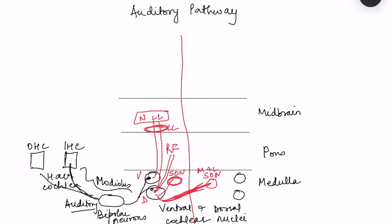From the superior olivary nuclei, fibers ascend to the inferior colliculus in the midbrain. Fibers that synapsed in the lateral lemniscus also reach the inferior colliculus. To summarize neuron order: first order neurons synapse in the ventral and dorsal cochlear nuclei; second order neurons synapse mainly in the superior olivary nucleus; and third order neurons reach the inferior colliculus.